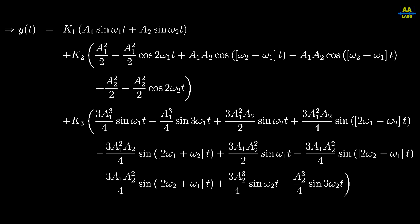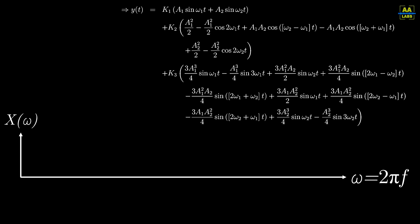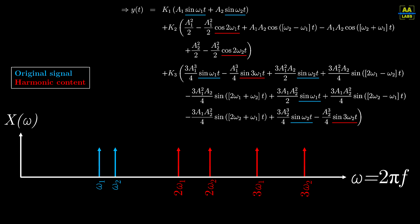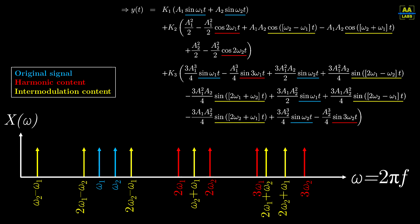But let's try to pick out the frequencies. We see the frequencies of the original two-tone signal. We see the harmonic frequencies of each of the tones. And we see these additional sum and difference terms, which represent IMD.